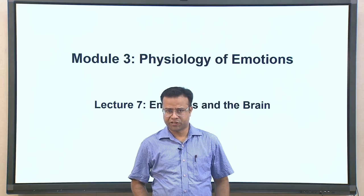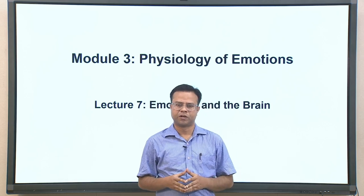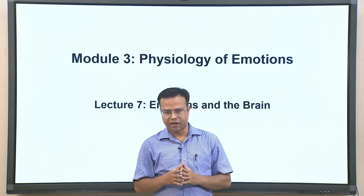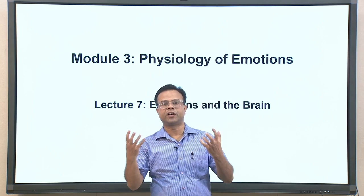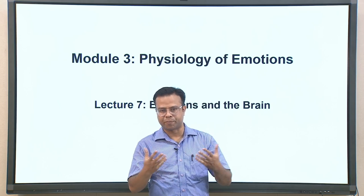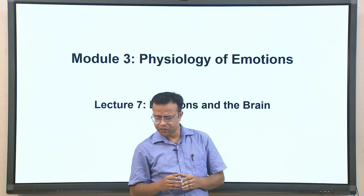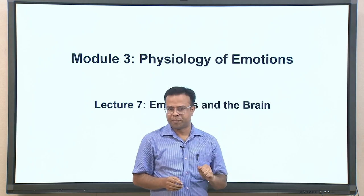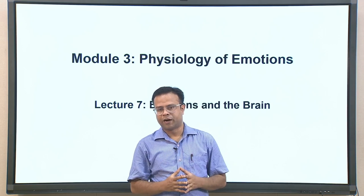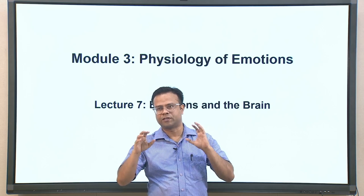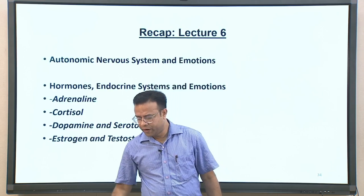Welcome to Lecture 7 of the course titled 'Psychology of Emotion: Theory and Applications.' This is the second lecture of Module 3, which is about understanding the physiological impact of emotion — what physiological changes happen whenever we experience emotions. The last lecture discussed how emotion impacts the body; today we talk about how emotion is associated with physiological changes in the brain itself.